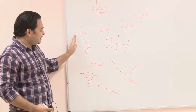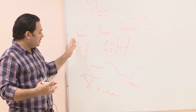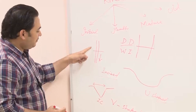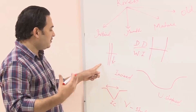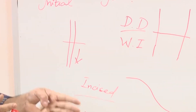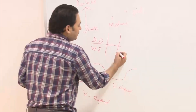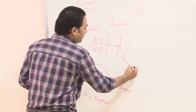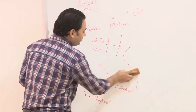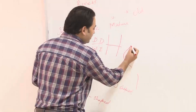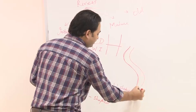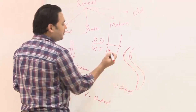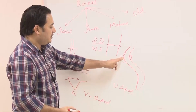In the initial case, rivers have lots of energy and are capable of eroding everything in their way, so they flow straight. As energy becomes lower, the river starts meandering. Suppose this is the river channel — it will start meandering, causing deposition at inner bends and erosion at outer bends.